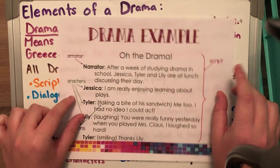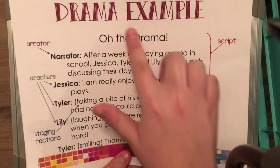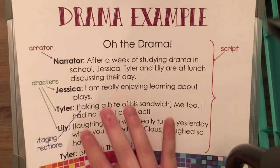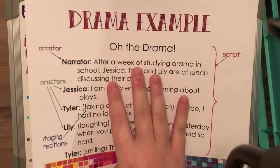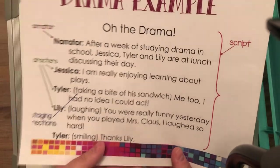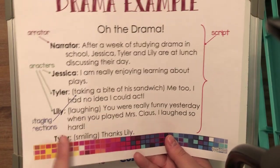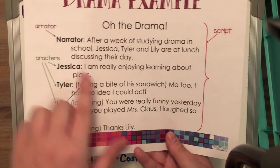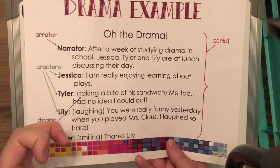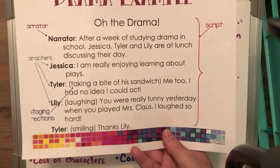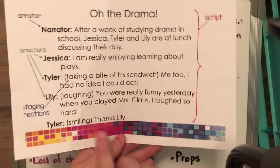I have printed out an example of a drama so you can really see and understand what it looks like. This whole thing is called the script. Here's our narrator telling us that after a week of studying drama in school, they're discussing their day — letting the audience and cast know exactly what's going on. You have actors Jessica, Tyler, and Lely. In parentheses you see stage directions like taking a bite of a sandwich, laughing, smiling. All of the spoken text is dialogue. In regular writing we use quotation marks for dialogue, but in a play there's no need, since plays are performed entirely with voice.